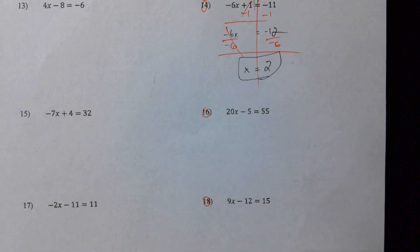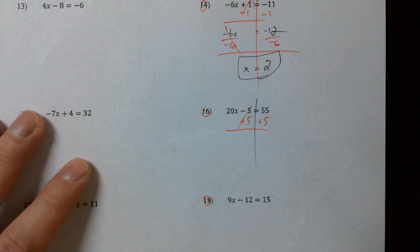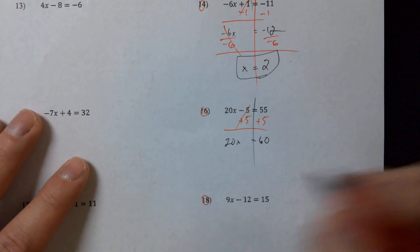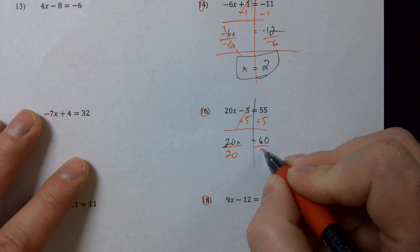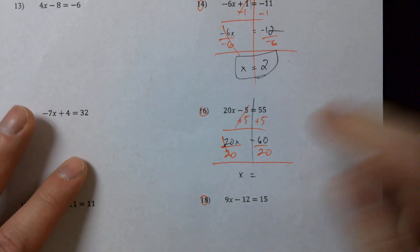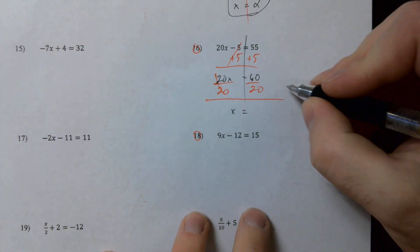Number sixteen, I'm going to add five to both sides. Plus five, plus five. Twenty x equals sixty. Now I'm going to divide by twenty. Now let's take a look at this for a second because this one is interesting. If I've got sixty over twenty, right, this is like saying six times ten over two times ten.